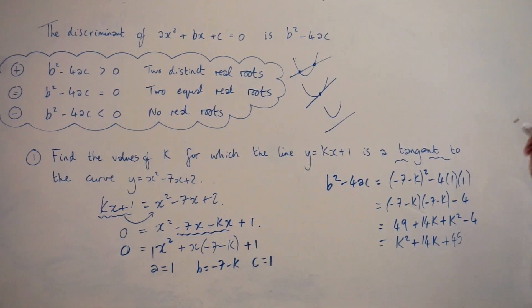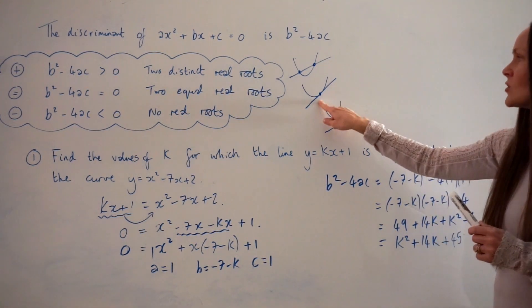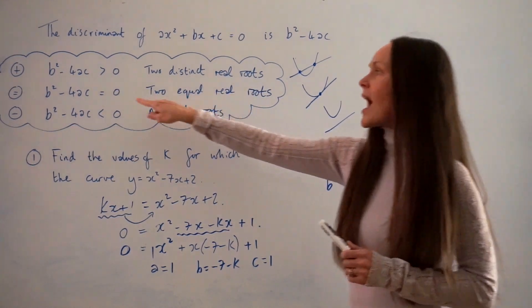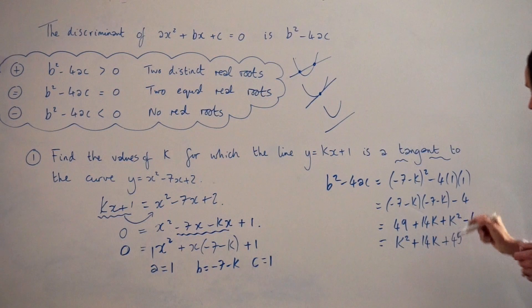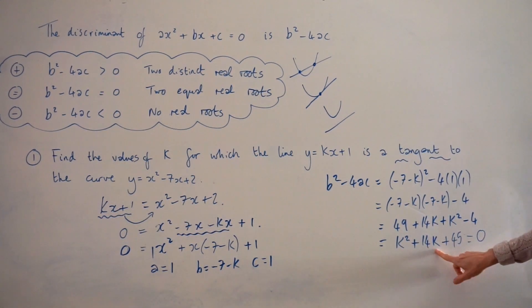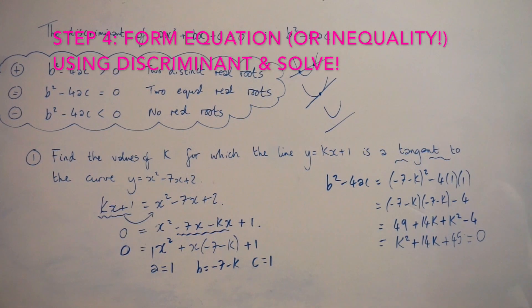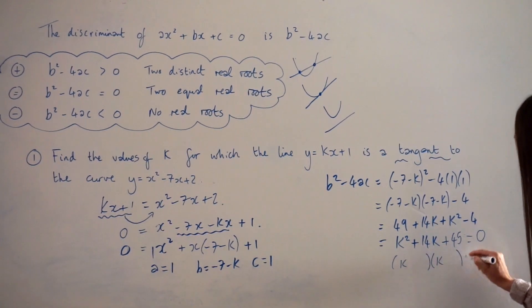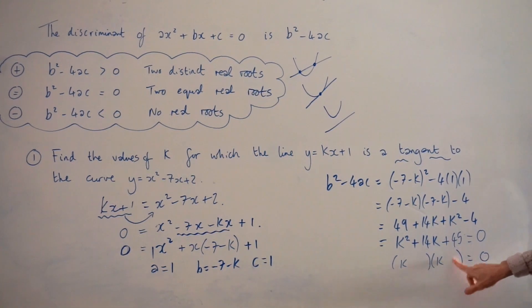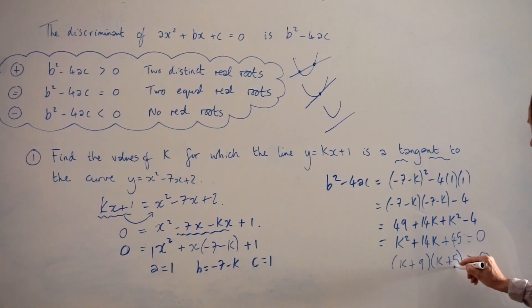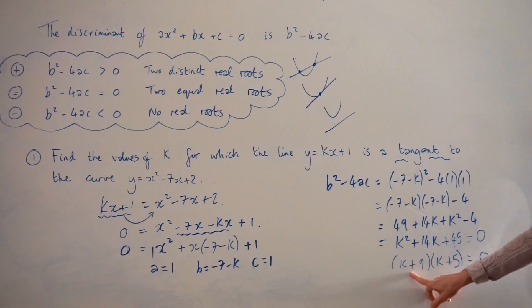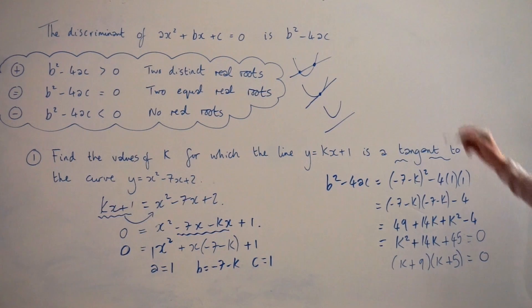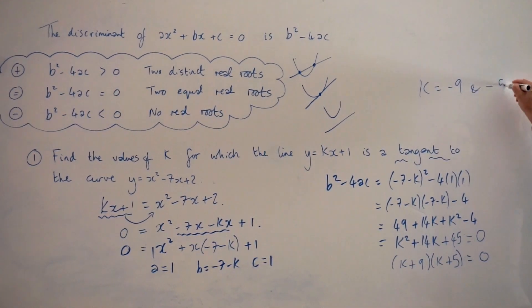Remember, the straight line is a tangent to the curve, so there are two equal real roots and the discriminant has to equal zero. So we set this discriminant equal to zero: k squared plus 14k plus 45 equals 0. We're solving this quadratic to find the values of k. We can factorize — these two numbers have to multiply to give 45 and add to give 14, so it's positive 9 and positive 5. From there, the two values of k are negative 9 or negative 5.